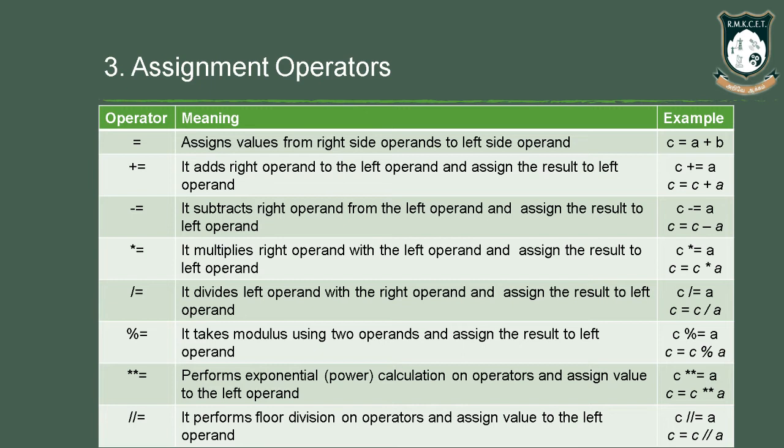Similarly we have minus equal to, multiplication equal to, division equal to, modulus equal to. The double star implies exponential calculation, so we have exponent equal to. The double forward slash implies floor division, so we have floor division equal to. These are the operators under the assignment category.